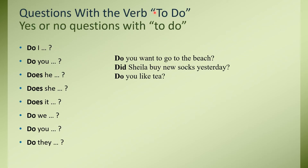If we want to make questions: Do I sing? Do you sing? Does he sing? Does she sing? Does it sing? Do we sing? Do they sing? You can also use 'did' for past questions: Did I sing? Did you sing? Did she sing? For example: 'Do you want to go to the beach?' 'Did she buy new socks yesterday?' 'Do you like tea?' One important point: when you use do, does, or did as an auxiliary verb with a main verb, you can only use it to make negative sentences or questions.